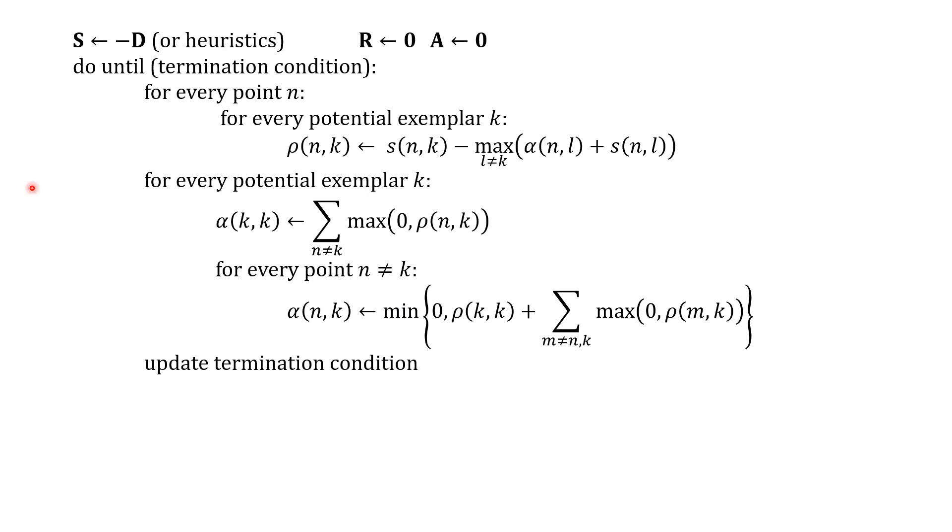And then for every potential exemplar we do this for the self-availability and for the cross-availability. And so this is carried out several times, and then we finally identify by adding up rho_kk and alpha_kk. If it's greater than zero, then we identify that point k as an exemplar.